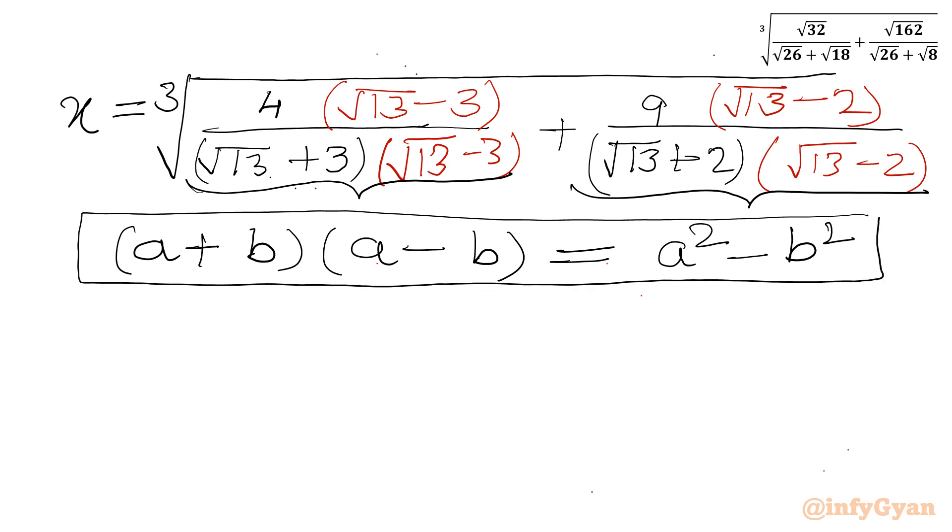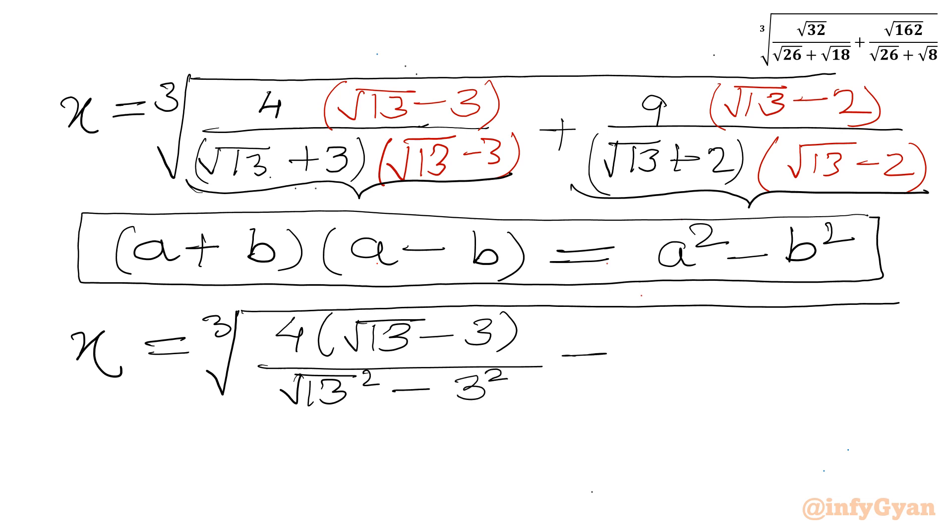Let us apply to our denominator. x will become cube root of 4 times square root 13 minus 3 over root 13 square minus 3 square plus 9 times root 13 minus 2 over root 13 square minus 2 square.